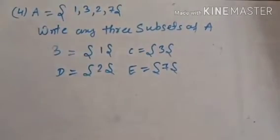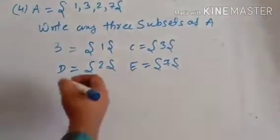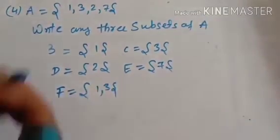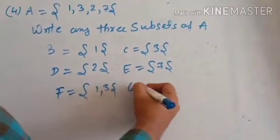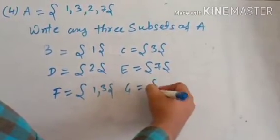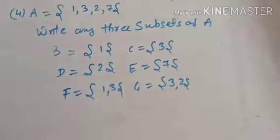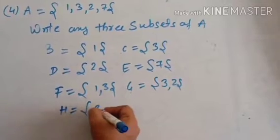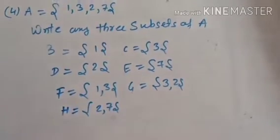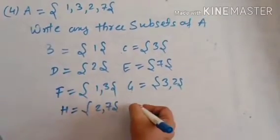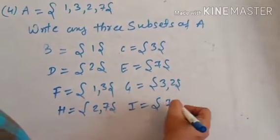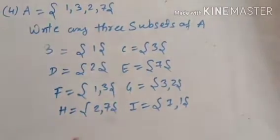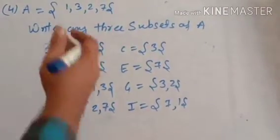After that we take pairs of two elements. F = {1, 3} is also a subset of A. G = {3, 2} is also a subset of A. H = {2, 7} is also a subset of A. And I = {7, 1} is also a subset of A.